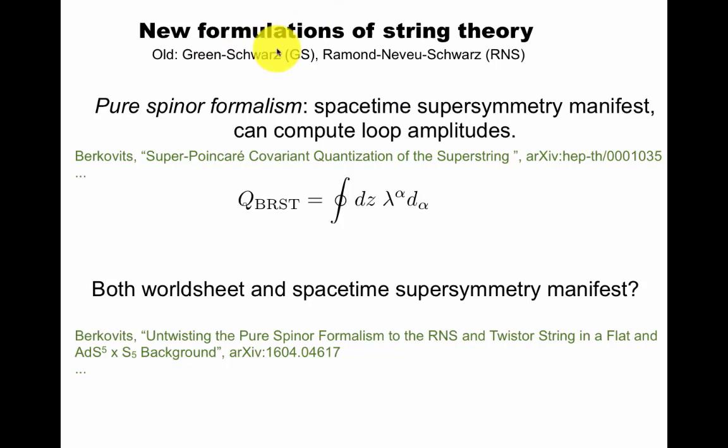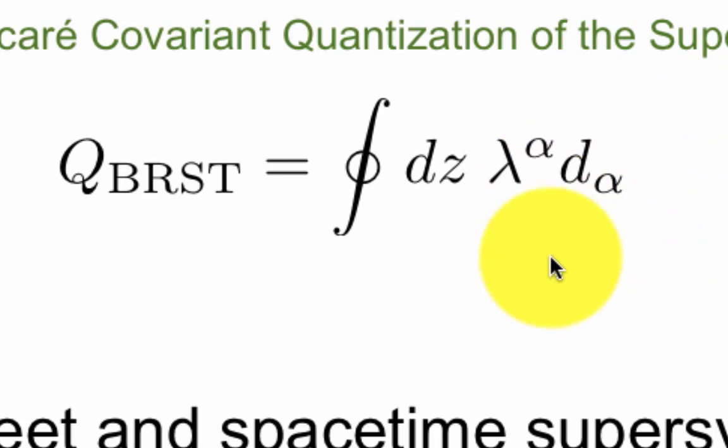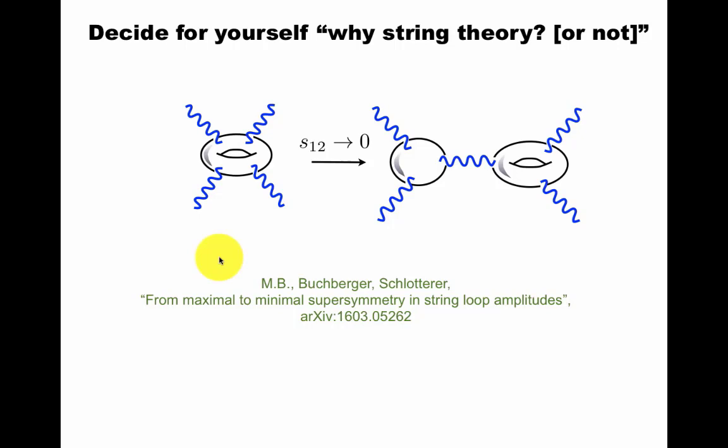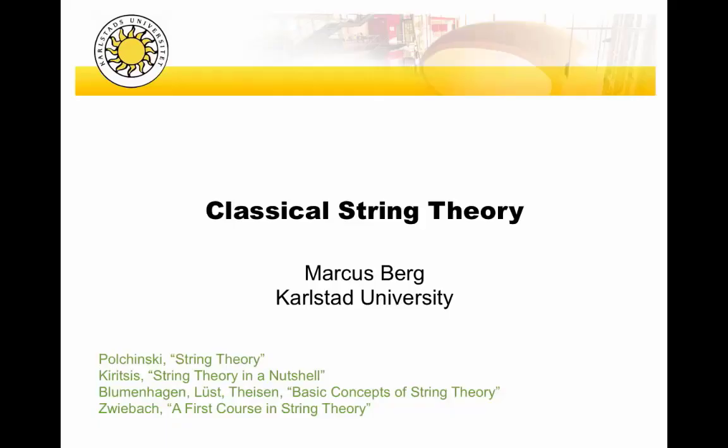There are some new formulations. This is also a work in progress. Whereas the old formulations, I mean Green-Schwarz or Ramond-Neveu-Schwarz formulations that are written in textbooks, but newer formalism from 2000 is a pure spinor formalism. Space-time supersymmetry is manifest, you can compute loop amplitudes, and you find a BRST operator that I mentioned earlier in terms of a pure spinor, and this object that gives a space-time supersymmetry derivative. So you should decide for yourself in this paper, and as a follow-up, you can see some of my motivations why I think string theory is exciting.